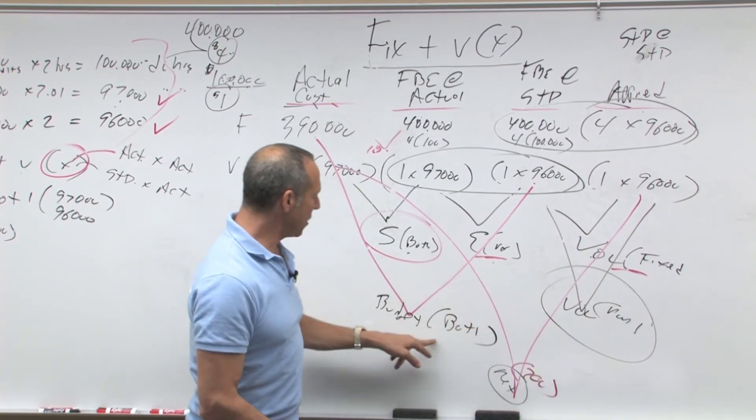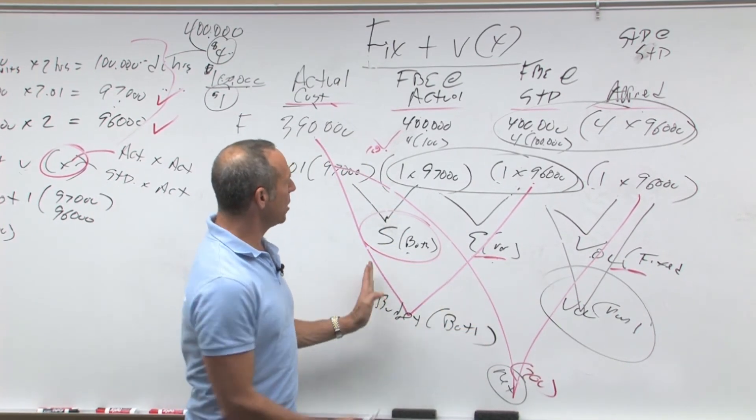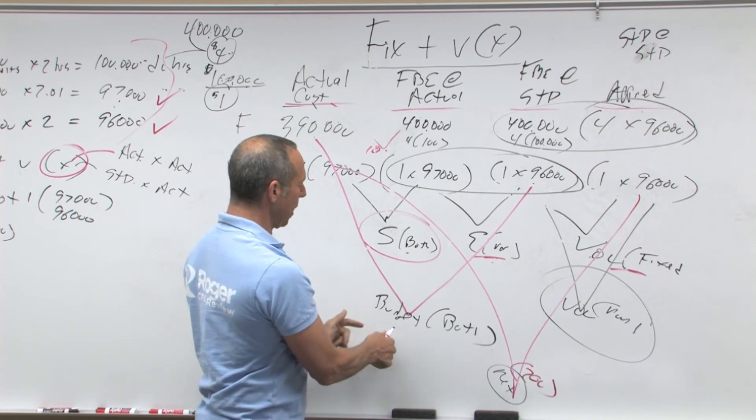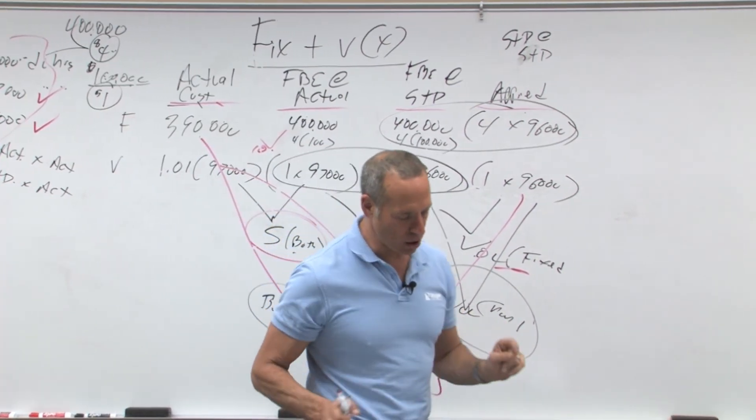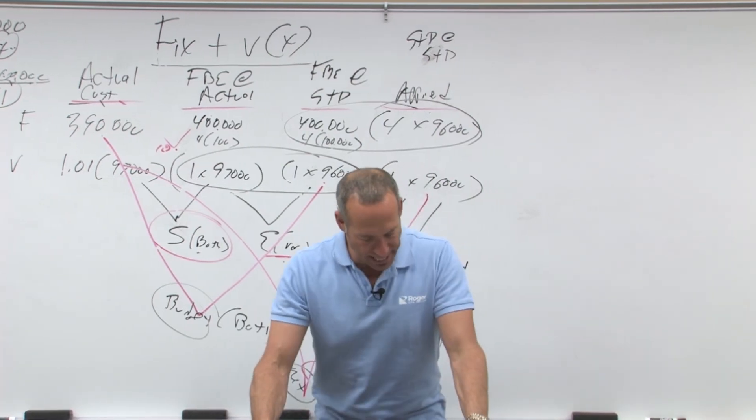So this is what? This is fixed only. This is both fixed and variable, and you can see why. So budget is both, volume is fixed only. Okay, so controllable budget, yes; volume, no.